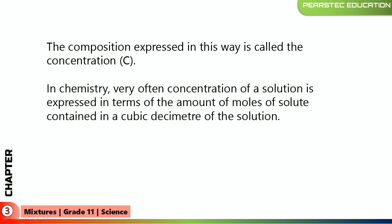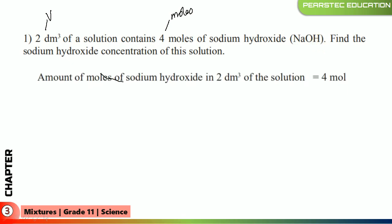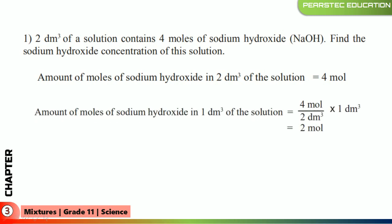In chemistry, the concentration of a solution is very often expressed in terms of the amount of moles of solute contained in one cubic decimeter of solution. For example: 2 cubic decimeters of solution contain 4 moles of sodium hydroxide. Find the sodium hydroxide concentration of this solution. The amount of moles of sodium hydroxide in 2 cubic decimeters is 4 moles. To find the concentration per 1 cubic decimeter: 4 moles divided by 2.